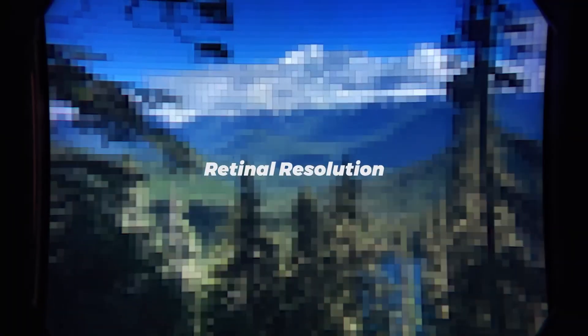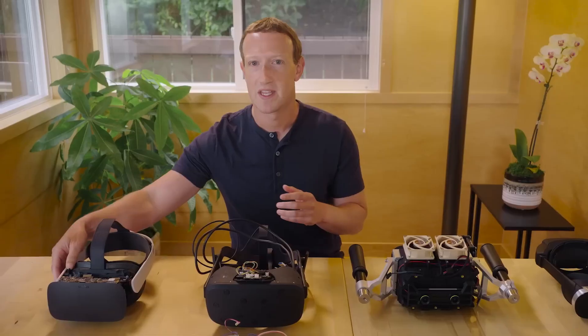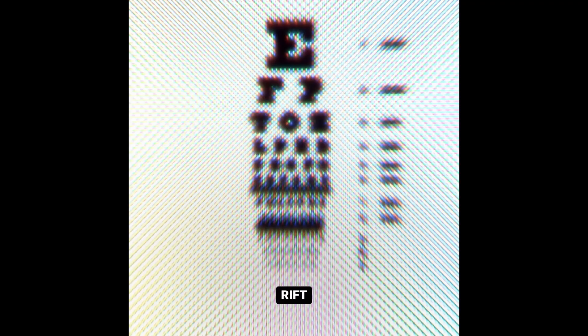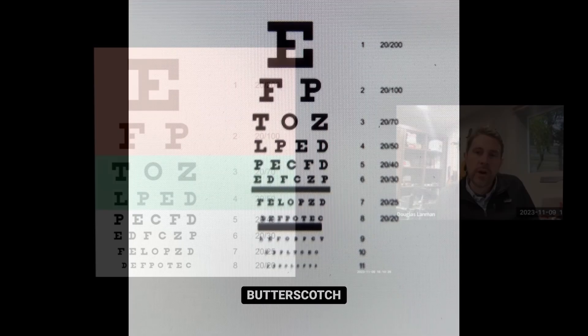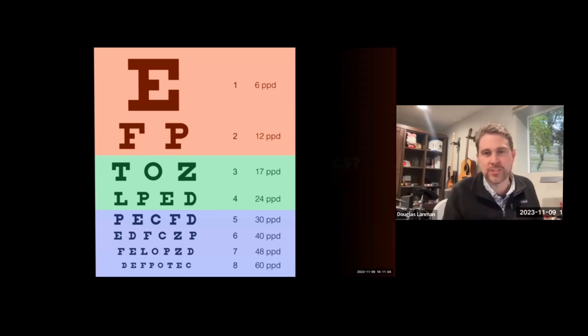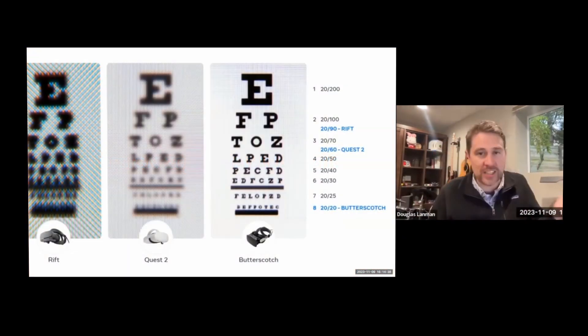In terms of resolution, compared to the human eye, VR today sits roughly at 20-40 vision. So half as good as what the average human can see. 20-30 pixels per degree. And what we need to be at is 60 pixels per degree for this to be retinal resolution. With off-the-shelf components, retinal displays are possible but at a lower field of view. And that was the prototype Butterscotch, an ultra-high resolution VR headset.